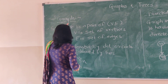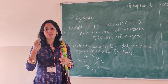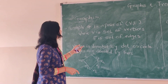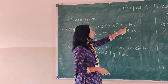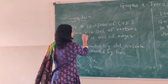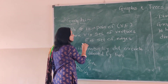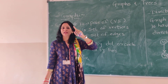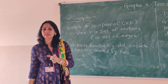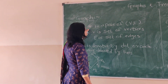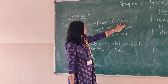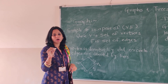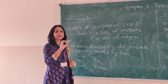Starting with graph — this word we have been hearing since childhood and you have drawn multiple graphs. So what is a graph? A graph is nothing but a collection of vertices and edges. That's why it is said that graph G is a pair of V and E, where V is the set of vertices and E is the set of edges. As both are sets, they are denoted by capital letters. Vertices are denoted by a dot or circle, whereas edges are denoted by lines or line segments.